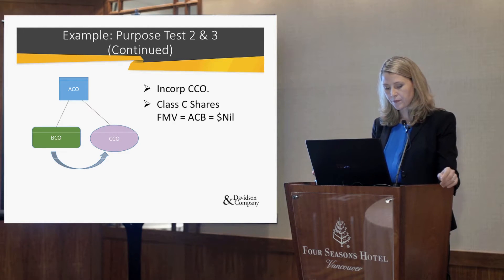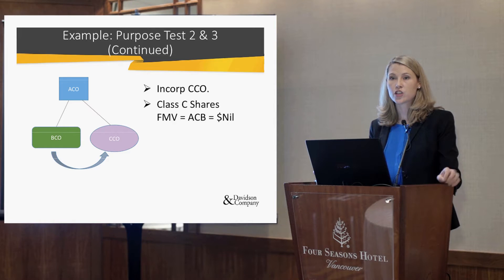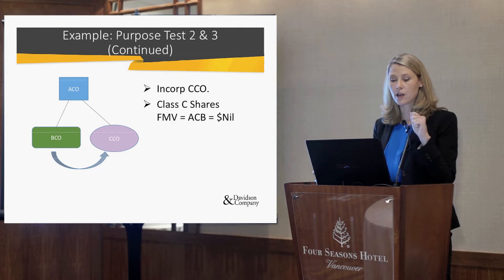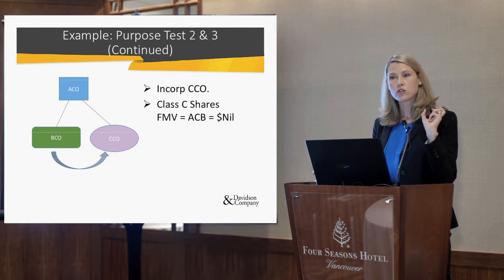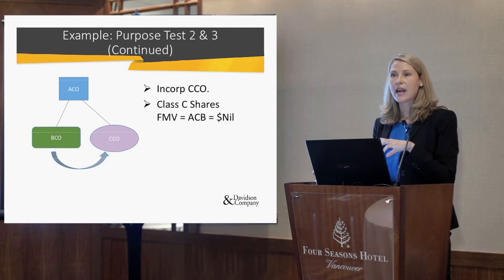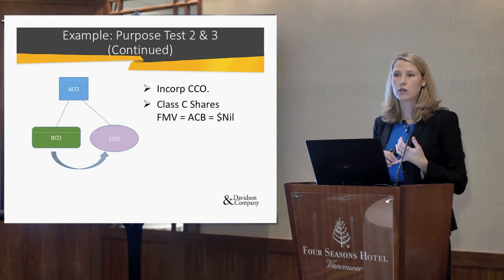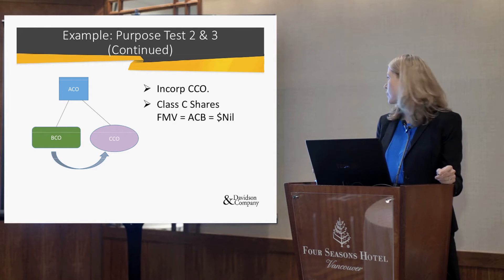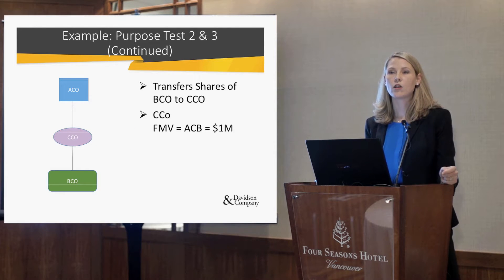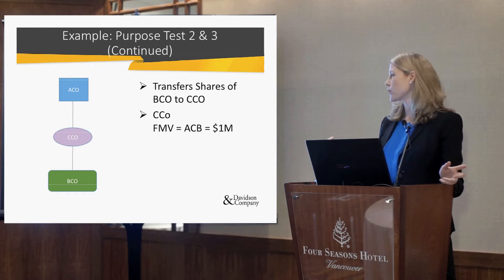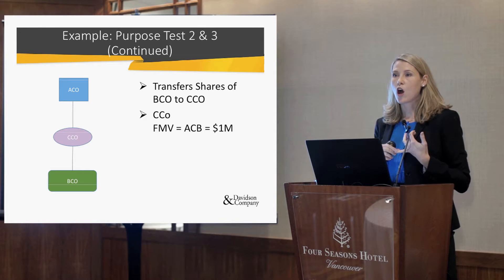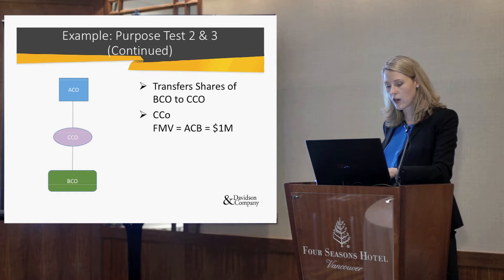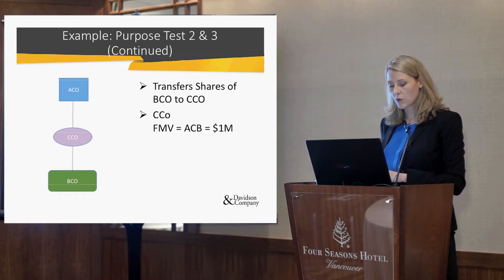Company A then transfers the Company B shares — with full cost base of $1 million — to Company C, receiving back shares worth $1 million. Now Company C is worth $1 million because the asset it owns — the Company B shares — is worth $1 million. So you've got full cost base in the Company C shares, with cost base and fair market value both at $1 million.